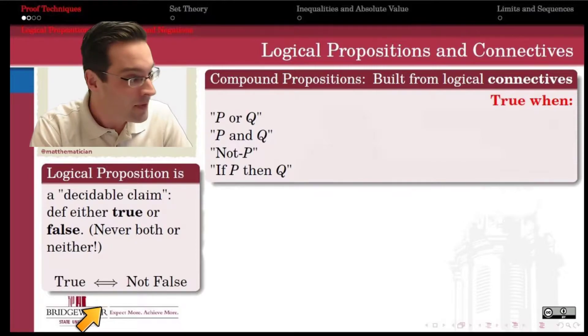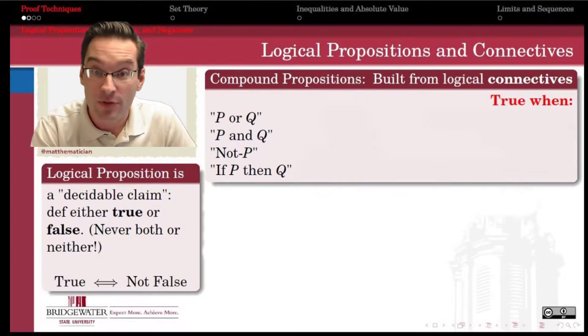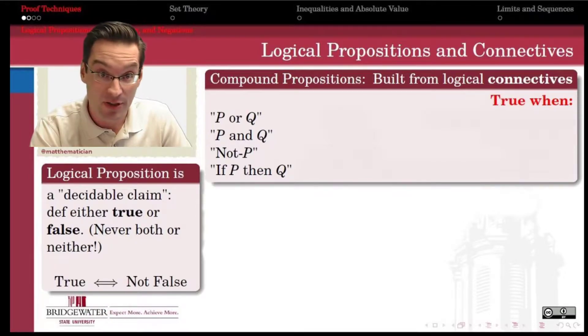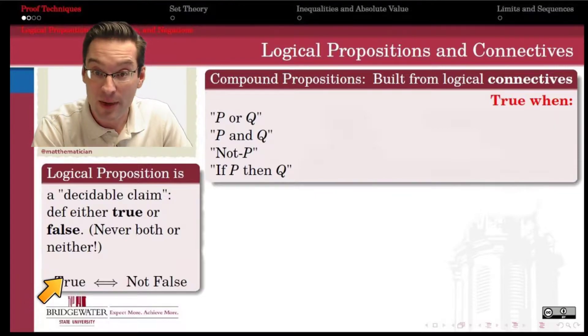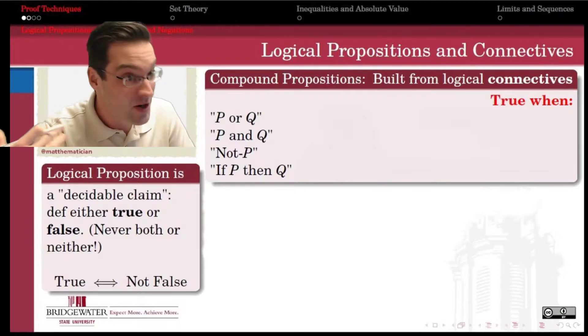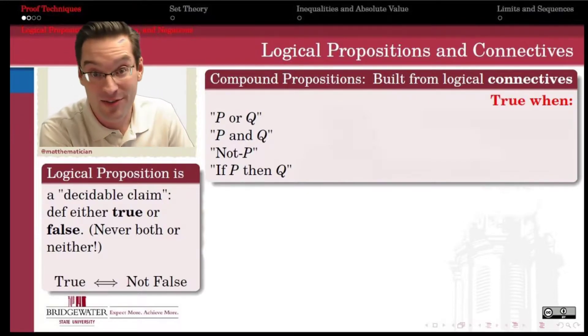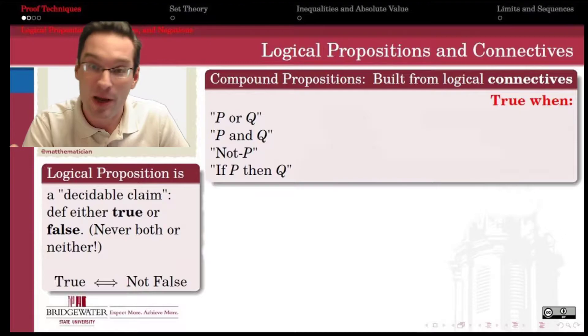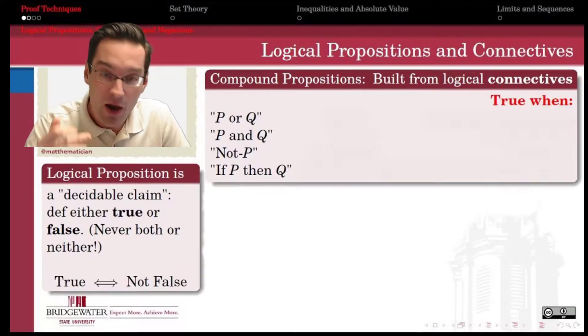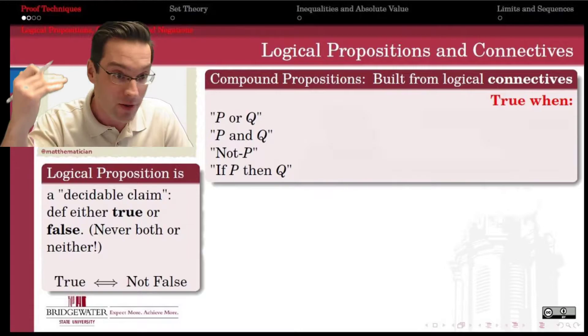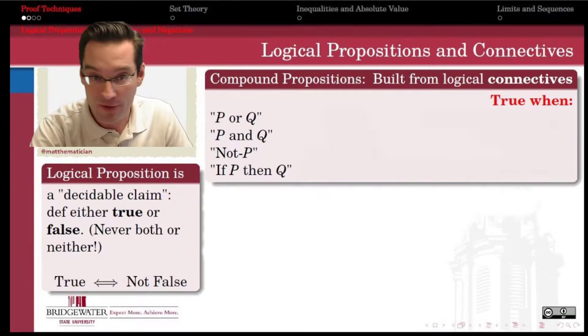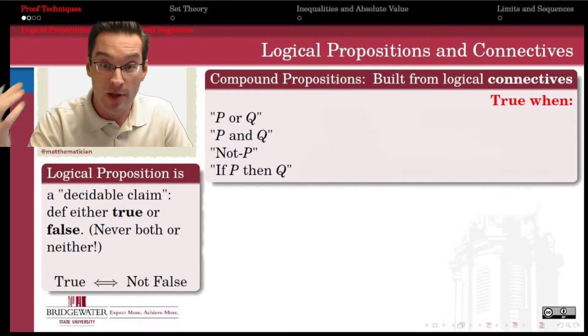Why this is important is it actually gives us an avenue for how to prove a logical proposition later on. Sometimes instead of proving directly that a statement is true, we can instead show that it's not false. And if I've shown that it's not false, that then guarantees that it's true. This is why we like logical propositions: they have this sort of black and white quality. They're either all the way true or they're all the way false. There's no in between and there's no none of the above.